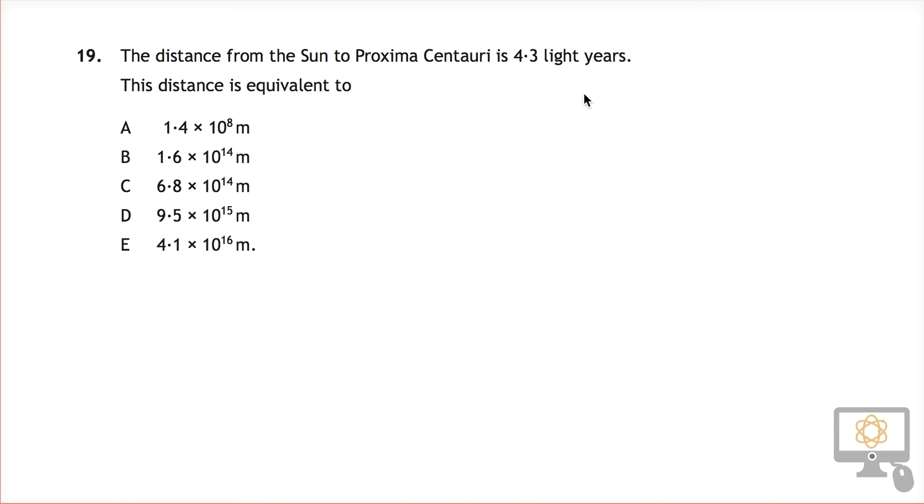We'll look at question number 19 from the 2015 National 5 physics paper. It says the distance from the Sun to Proxima Centauri, our nearest star, is 4.3 light years. This distance is equivalent to a certain distance in meters.